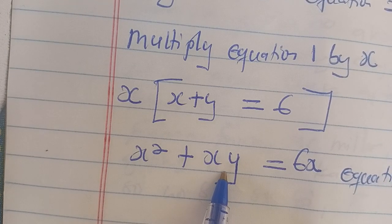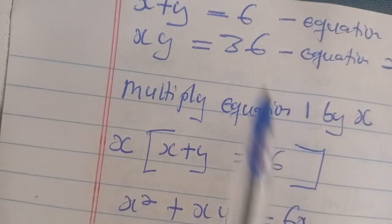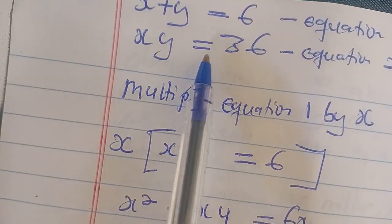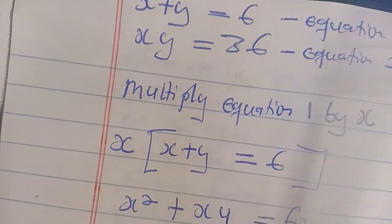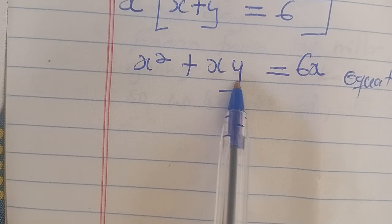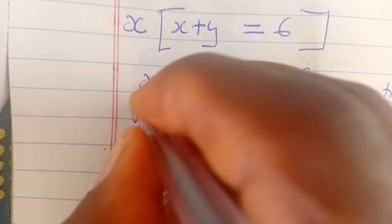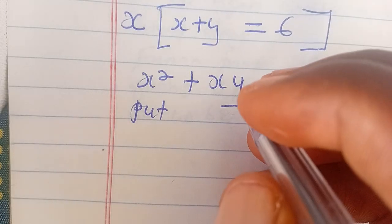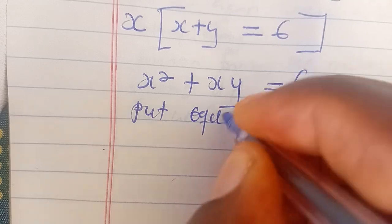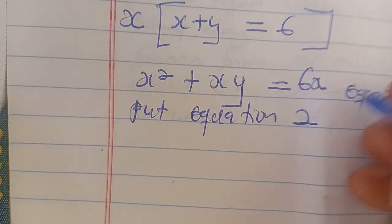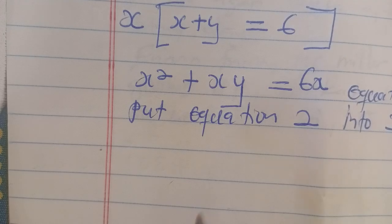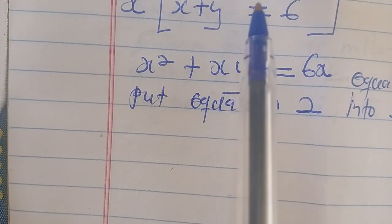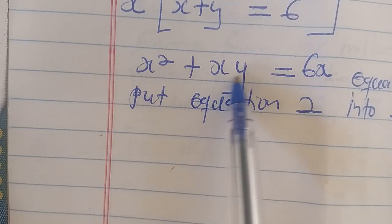We can see xy here in equation 3, and from equation 2 we also have xy. Since from equation 2 we know xy is equal to 36, we can substitute the value of xy — which is 36 — into equation 3.